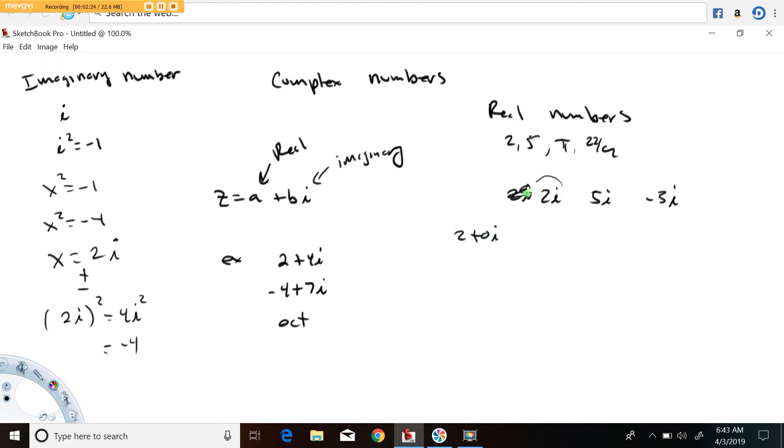Or 2i, you could think of that as 0 plus 2i. So everything on the page here is some subset of what's called the complex number system.